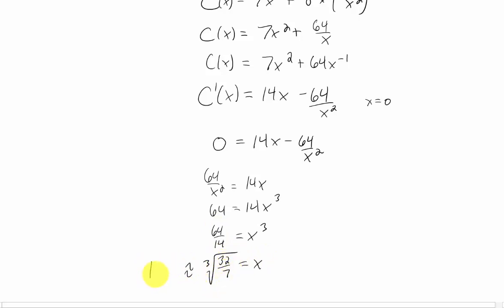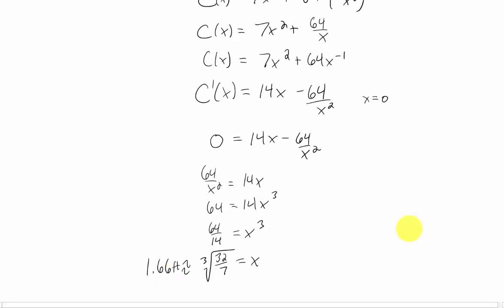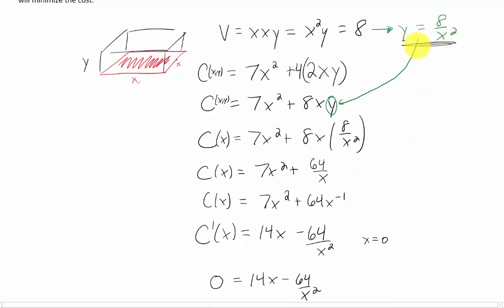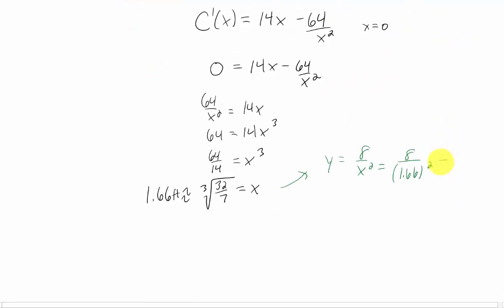In case you're wondering what that value is, it's about 1.66 feet. So the X value that's going to minimize the cost of our box is about 1.66 feet. We need to find our Y value as well, and we're going to find it by plugging our X into this formula. This gives us approximately 2.90 feet.